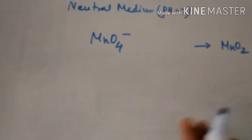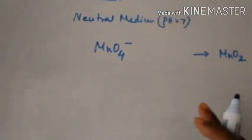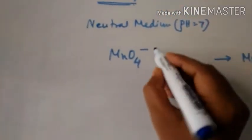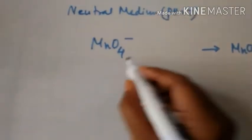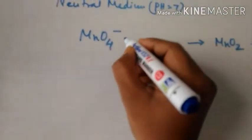MnO4⁻ forms manganese dioxide, MnO2. For this reaction, we need to account for 4 oxygens, which forms 4 OH⁻, and then 2 water molecules.